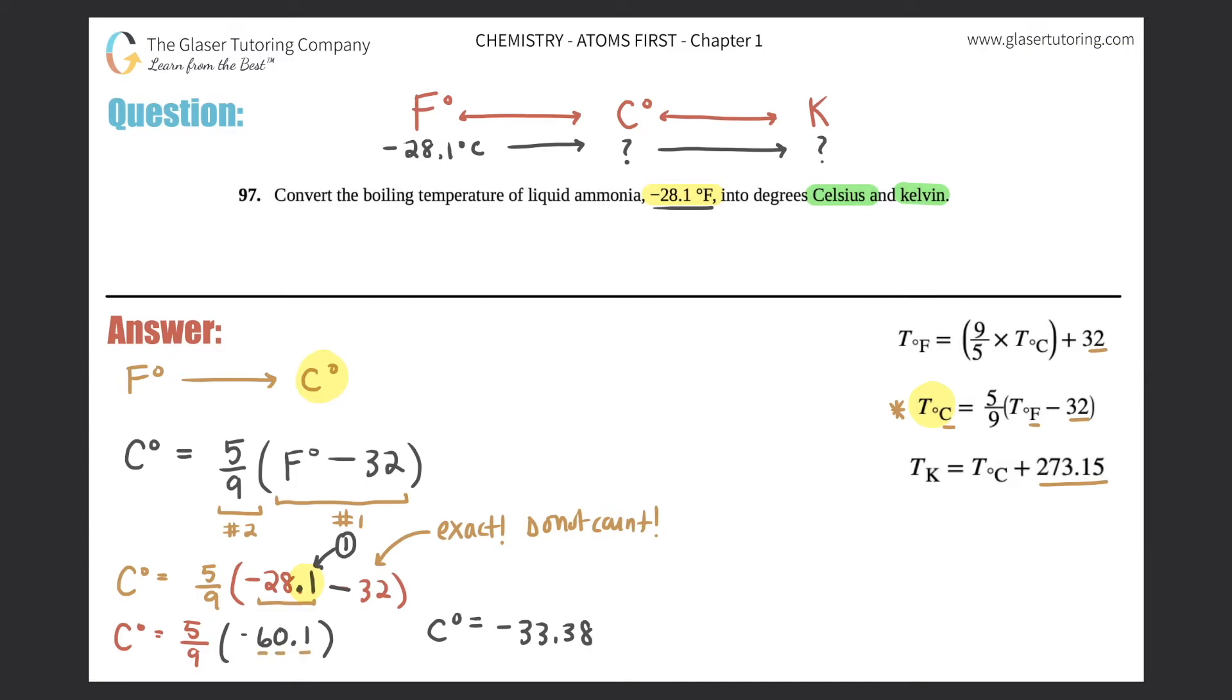However, this is now multiplying and dividing, so you need to know your sig figs for multiplying and dividing. The 60.1 were three sig figs. The 5/9 is an exact number, so we don't care about that. So three sig figs here means that this answer should have three sig figs as well. So the three, three, and the three stay. The eight will actually bump that three up into a four. So your Celsius, I'll just put it up top here, your Celsius is equal to -33.4. So that would be the answer here: -33.4°C. Box that answer off. That's the first one.